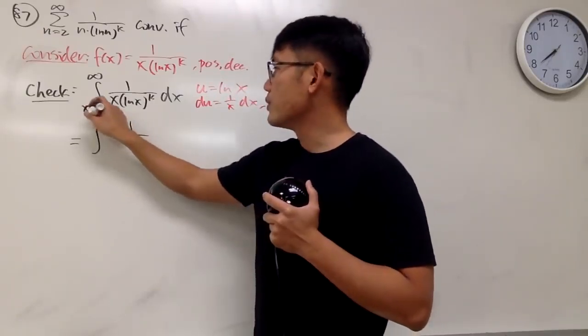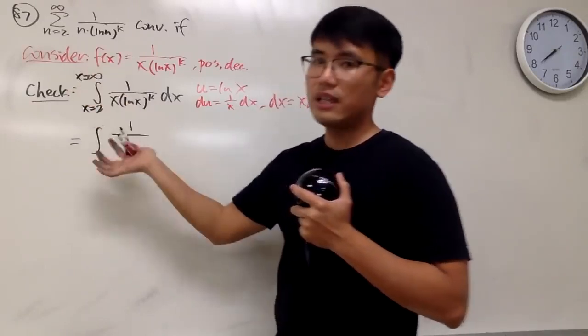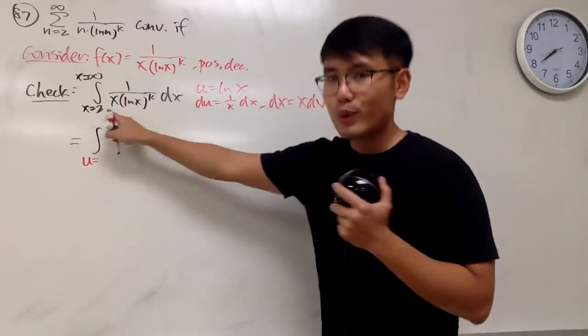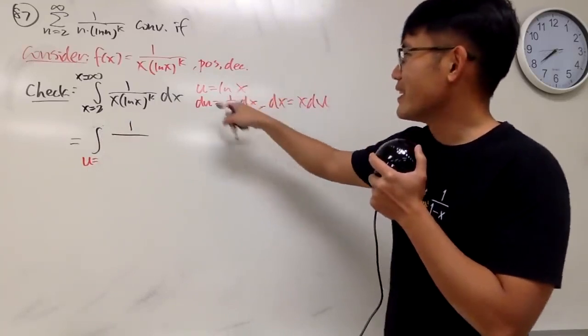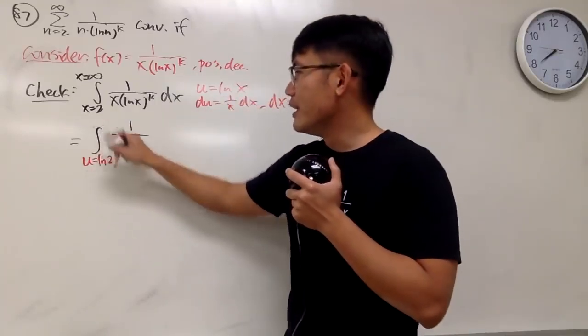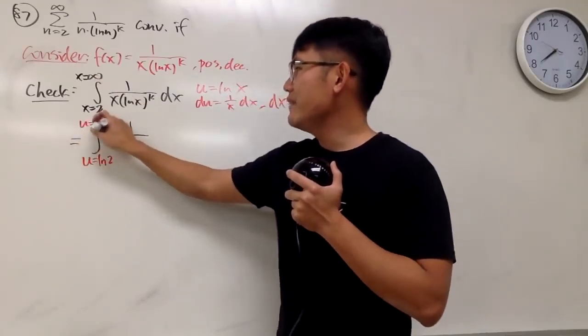x goes from 2 to infinity. But let's take care of this in the u world. u will go, when you plug in 2, into here, you get u is ln 2. Plug in infinity here, u will be infinity.